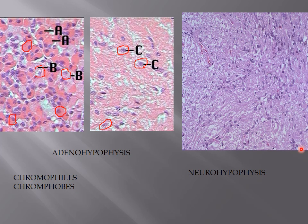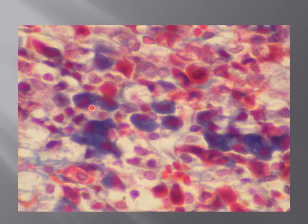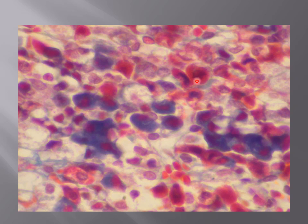At high power on the anterior pituitary slide, you can clearly see the blue basophilic cells, the pinkish acidophilic cells stained with hematoxylin and eosin, and the chromophobes — cells where the nucleus is visible but the cytoplasm is free of secretory granules, taking no color. These chromophobes have no affinity for dyes. So now you can differentiate all acidophilic cells and basophilic cells in the slide.